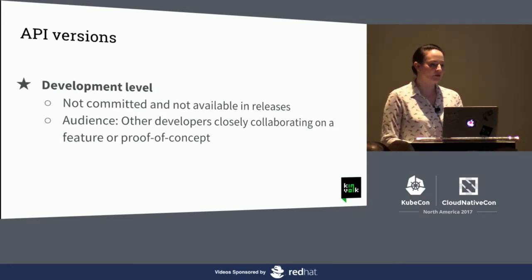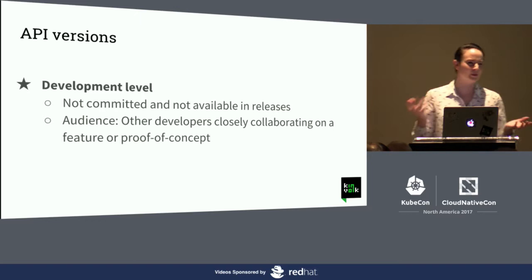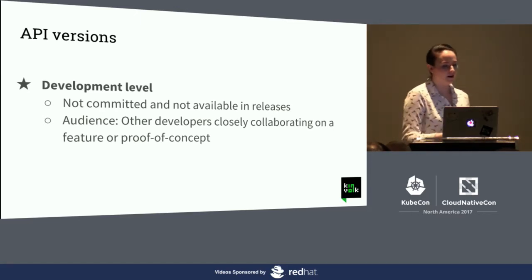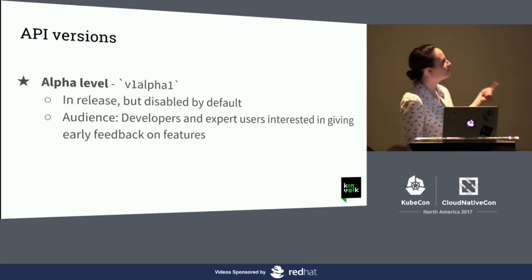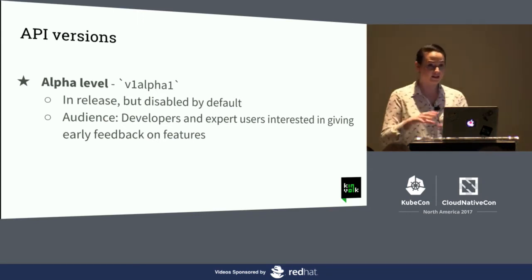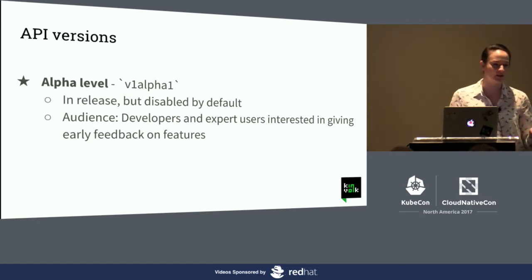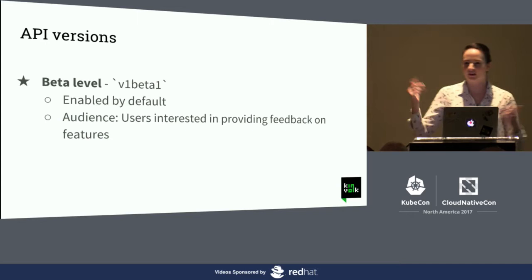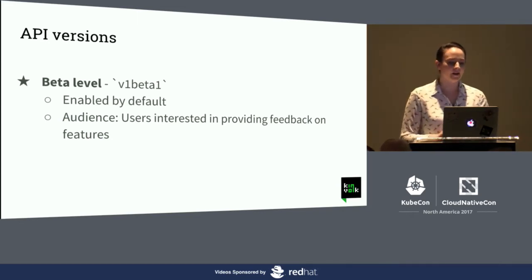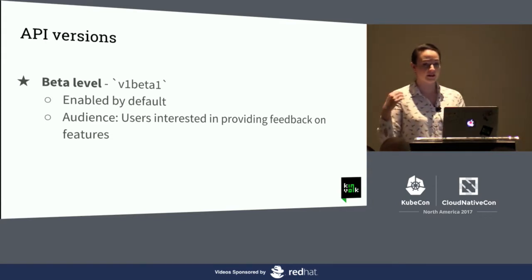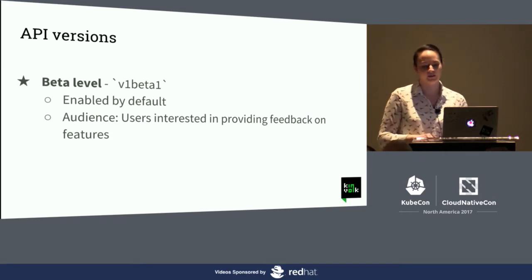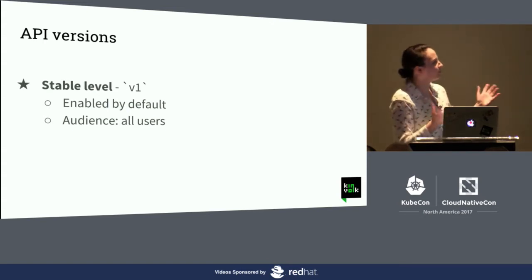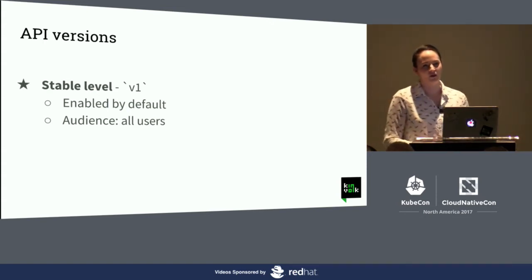There are four types. The first is the development one — not something many people come across because it's not in releases; it's basically just for testing new features and proof of concept. The next is the alpha level, which is in the release but you have to enable it in your cluster to consume it. Then there's the beta — most of you are familiar with it; deployments are still in beta in 1.8. The difference between beta and stable is that beta is recommended for short-lived testing clusters so you can test things thoroughly before they go stable. The stable version, for example version one, is enabled by default and considered stable.